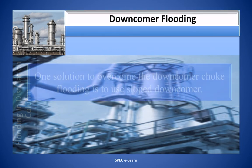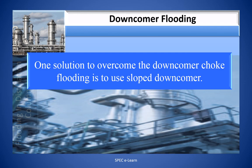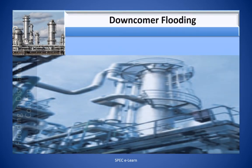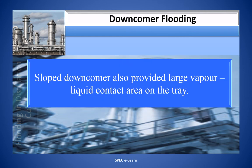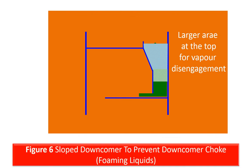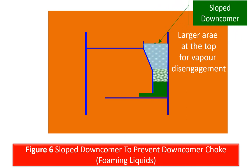One solution to overcome downcomer choke flooding is to use a sloped downcomer. A sloped downcomer has a wider mouth at the downcomer entrance with a larger area than at the bottom, which facilitates vapor disengagement from the downflowing liquid. It also provides a larger vapor-liquid contact area on the tray, leading to an increase in the bubbling area. This figure illustrates a sloped downcomer — note the large area at the entrance, which helps to reduce velocity.